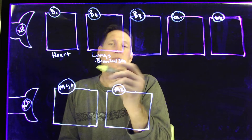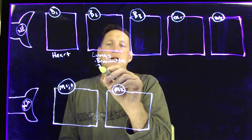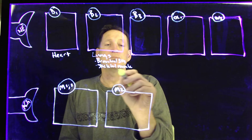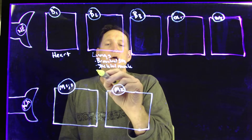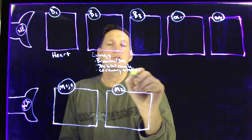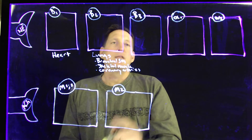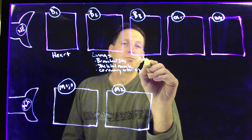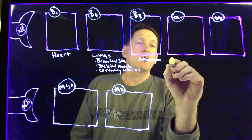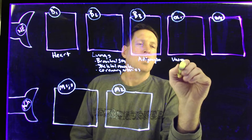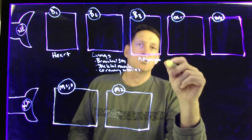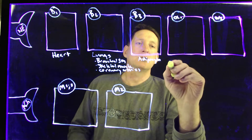Beta-2 receptors are also found on the vasculature in skeletal muscle, on vascular smooth muscle, and on the coronary arteries — this will have the same relaxing effect on all of those. Beta-3 receptors are found on your adipocytes.